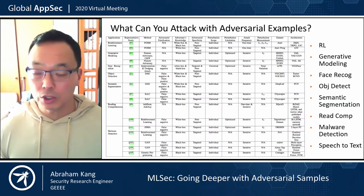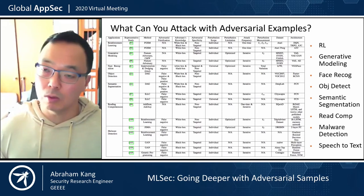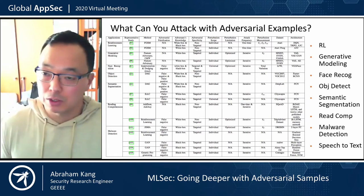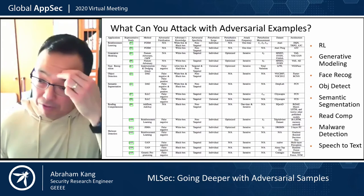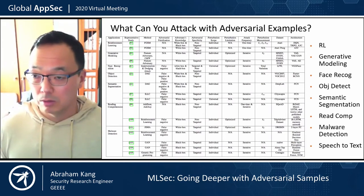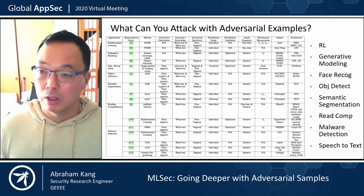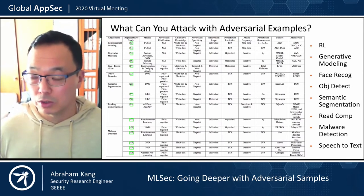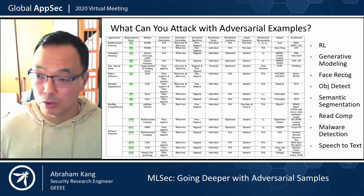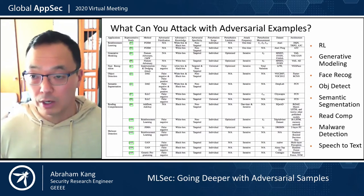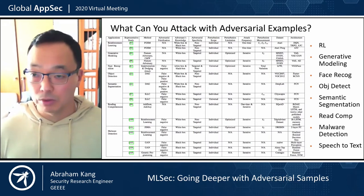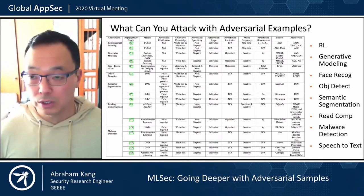When we look at adversarial samples and ask what types of models you can attack, the answer is pretty much everything. This specifically relates to deep learning, but today we're talking about other machine learning models prevalent in enterprises used to make decisions and predictions. They're vulnerable as well — it's not just deep learning. Almost every single machine learning model has this vulnerability.